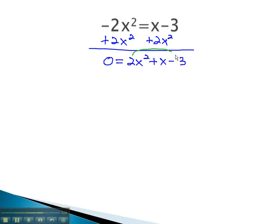Using the AC method to factor, we want to multiply to negative 6 and add to 1. This would be 2 times 3, where the 2 is a negative. Using this to factor, the only way we can get the 2x squared is by multiplying 2x times x.